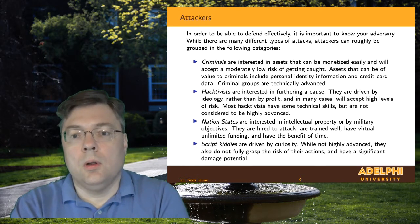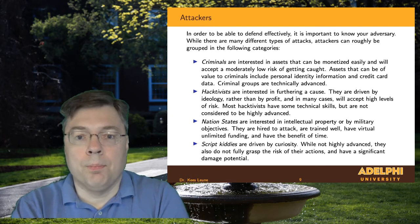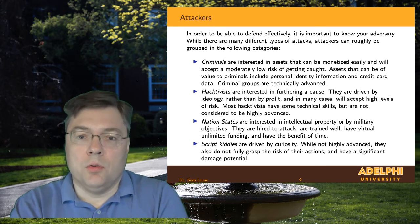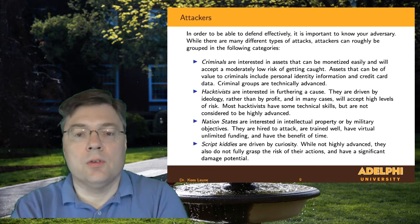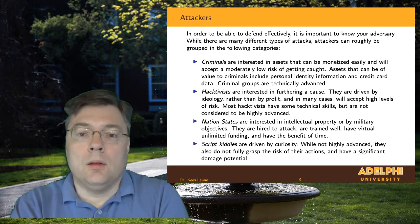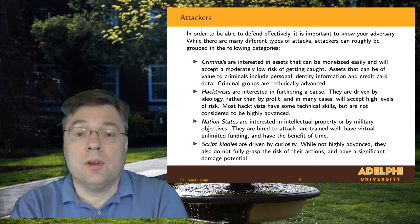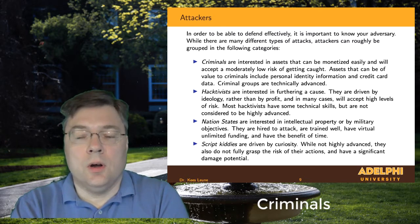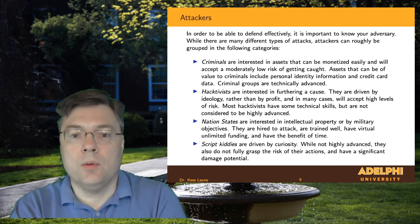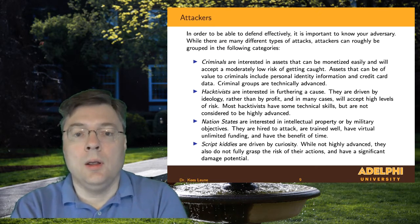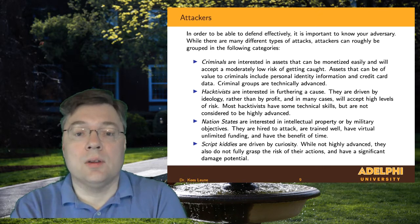So then the question becomes: who are the attackers? Rather than putting individual names on them, we look at categories of attackers. For example, there's the category of criminal. A criminal is interested in low risk, high gain — they're trying to make money by doing something the law prohibits, and ideally in a way that they don't get caught very easily.